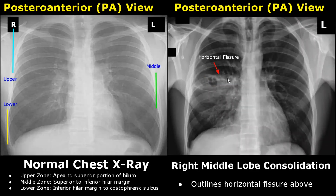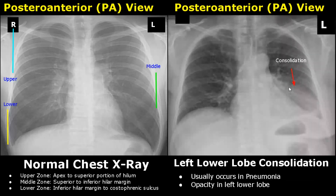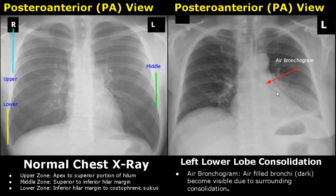Right middle lobe consolidation is seen when the consolidation is below the horizontal fissure, meaning the middle lobe is involved — usually due to pneumonia, but requiring clinical and lab correlation. In left lower lobe consolidation, which usually occurs in pneumonia, an air bronchogram may be present. Air bronchogram is a feature in which the air-filled bronchi become visible due to surrounding consolidation. The dark bronchi become prominent because of nearby consolidation, whereas in a normal image the bronchi in this area are not visible.